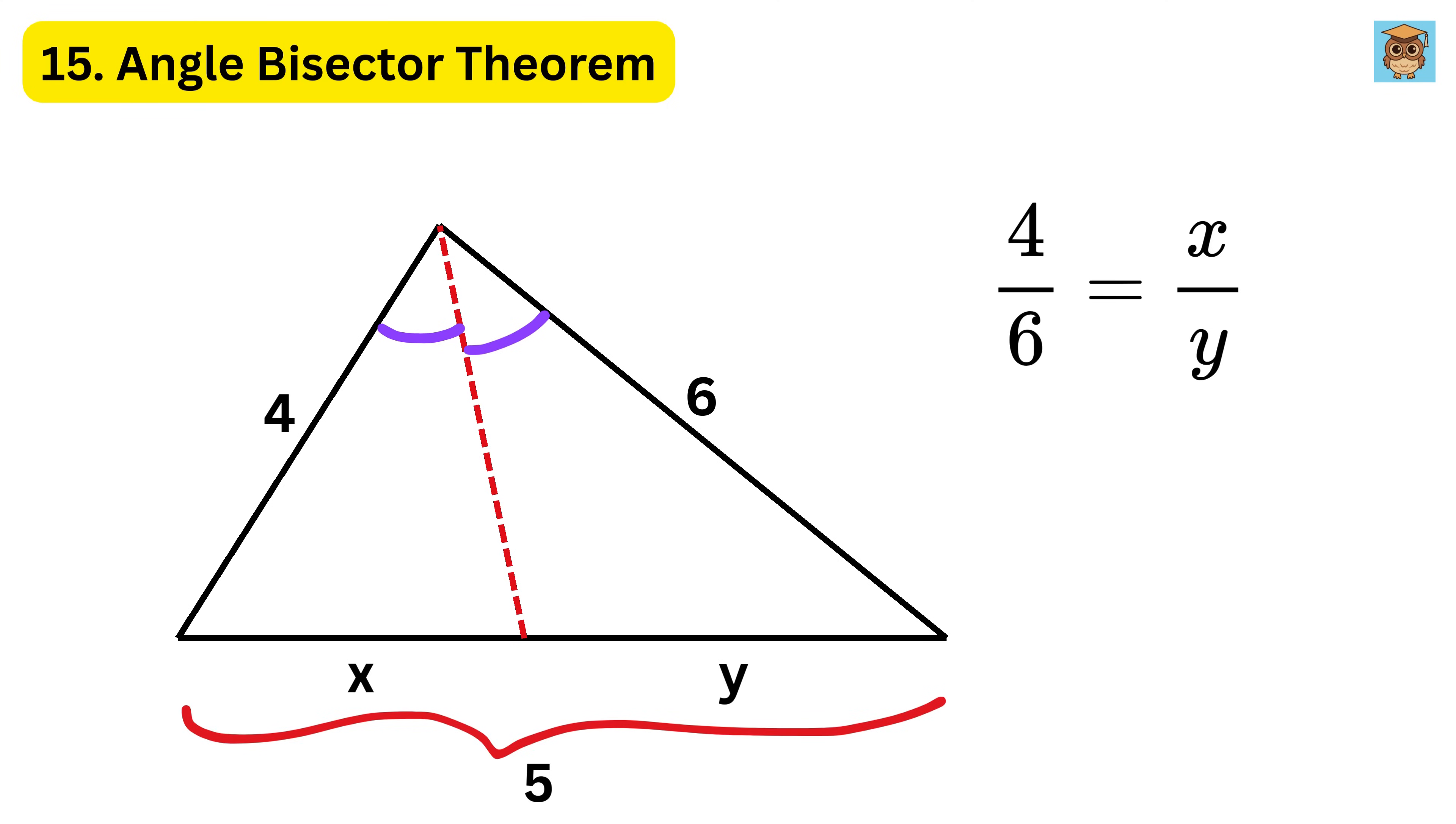Suppose the opposite side is five centimeters long, since the other two sides are in the ratio four to six, which simplifies to two to three. This first segment is 2 divided by 2 plus 3 times 5, which is 2 centimeters. The second segment is 3 divided by 2 plus 3 times 5, giving 3 centimeters.